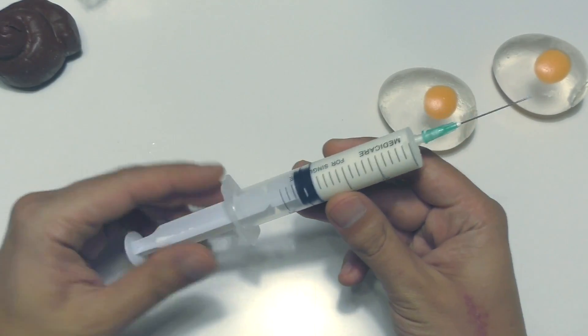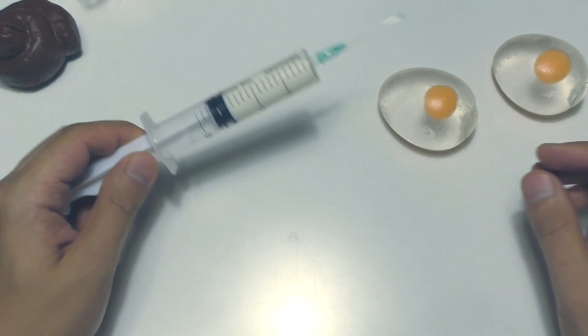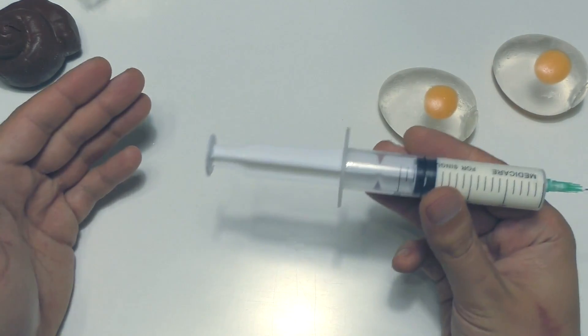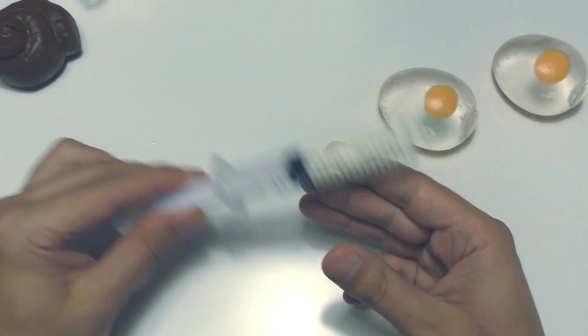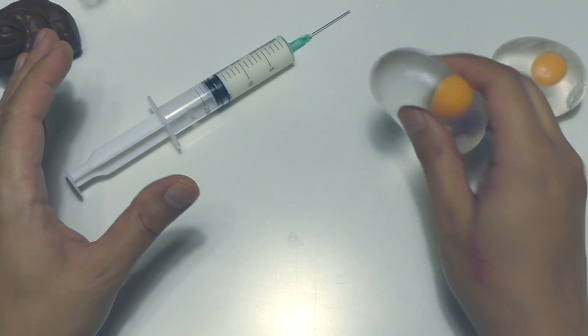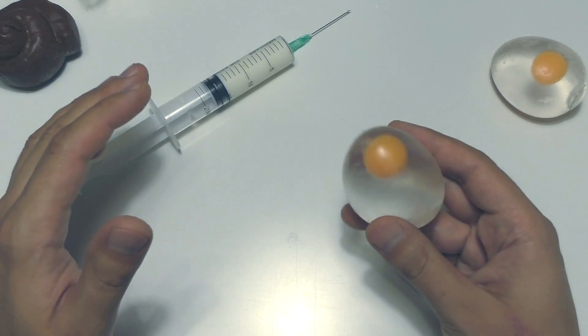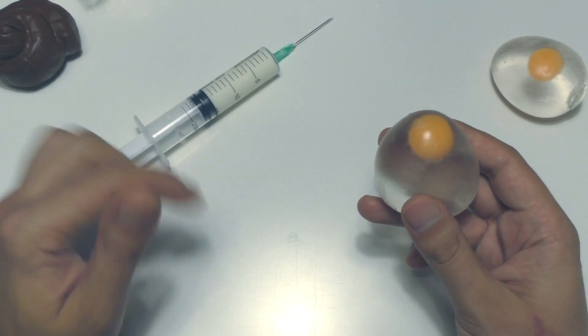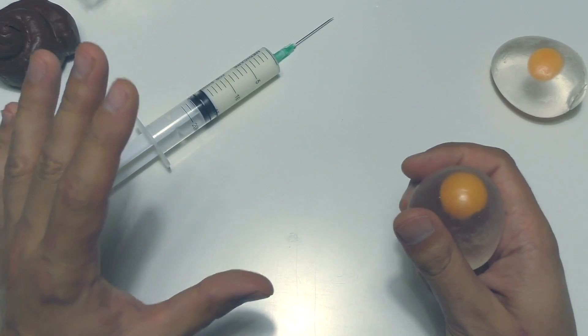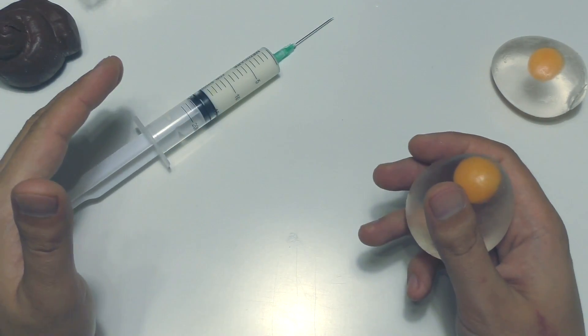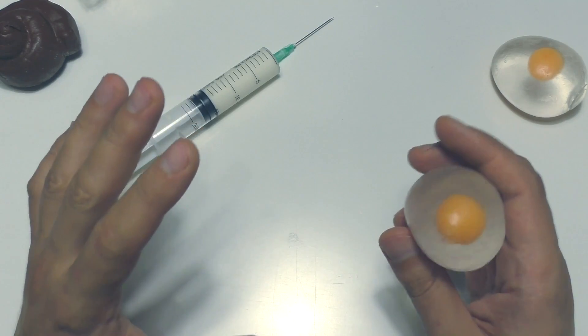But do you know what is the most fun about this egg stress ball? It is that in this egg you can add different liquids with a syringe. It even has a special place with thicker rubber. Now I'll try to inject milk and coca-cola into such an egg.